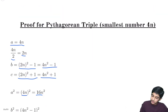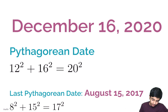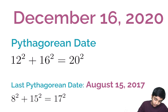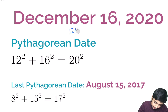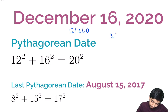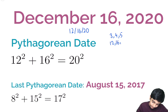So back to our original question: December 16, 2020 — the Pythagorean date. What is so special about this? We can see that 12, 16, 20 are a Pythagorean triple. It's actually 3, 4, 5 times 4 — the Pythagorean triple 3, 4, 5 with all its side lengths multiplied by 4 to get 12, 16, 20. And we can verify it satisfies the Pythagorean theorem.